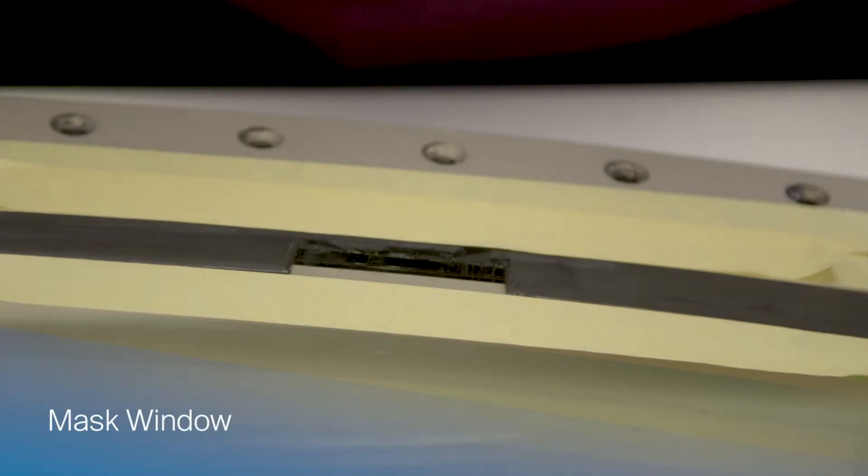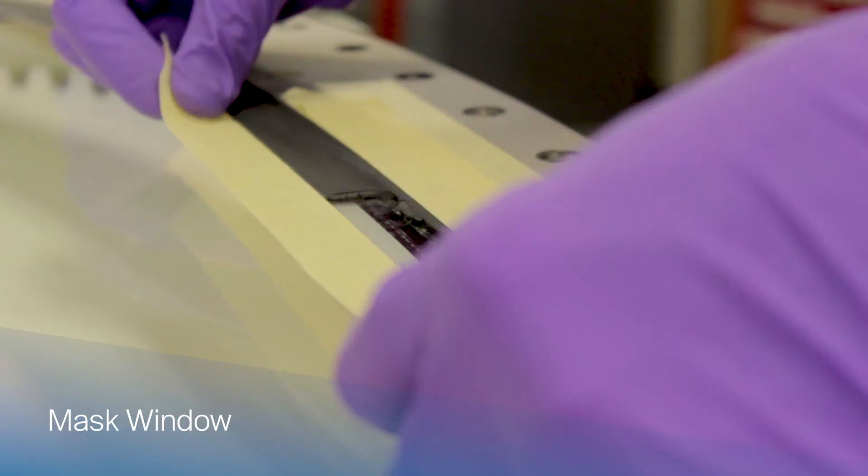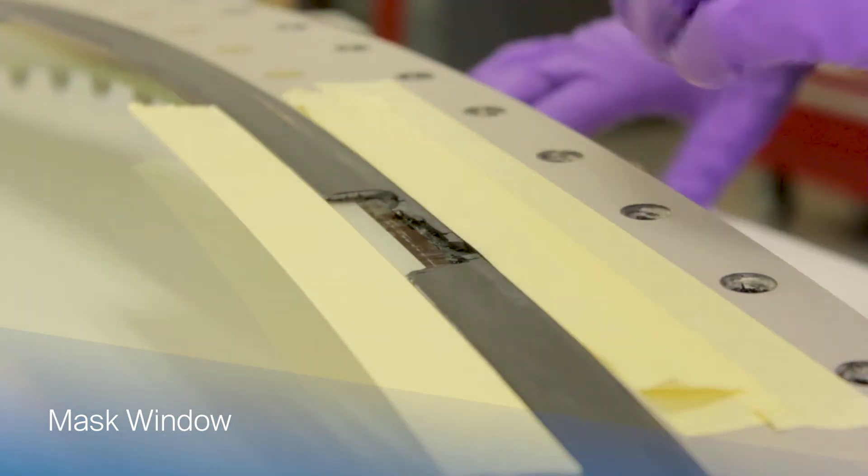Use masking tape to mask off the glass surface in the vision area of the window using the existing sealant as a guide.